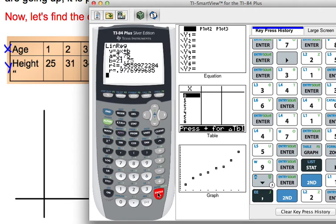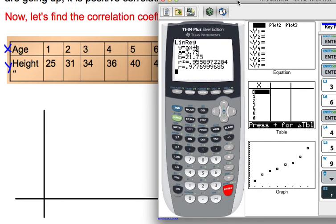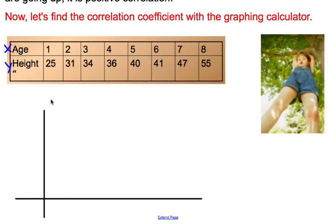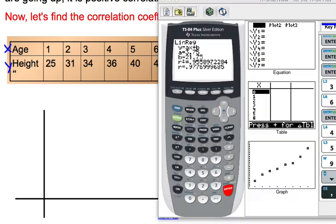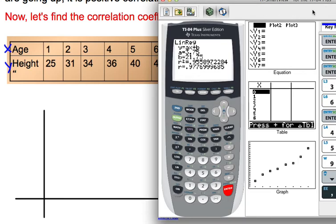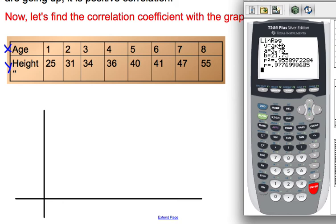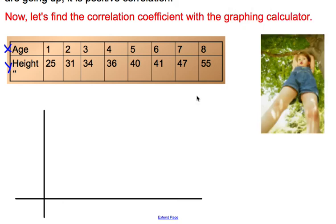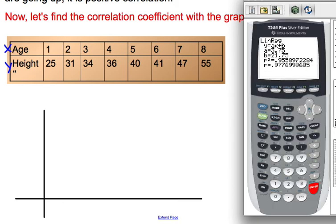You'll see there you have your values for your slope, your y-intercept, and your correlation coefficient. I'm going to write those down. If I notice this screen here, your slope is 3.75, your y-intercept is 21.75, and your correlation coefficient is 0.9776.